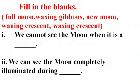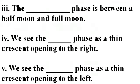Fill in the blanks. Question number one: We cannot see the moon when it is a dash. Question number two: We can see the moon completely illuminated during dash. Question number three: The dash phase is between a half moon and full moon. Question number four: We see the dash phase as a thin crescent opening to the right.